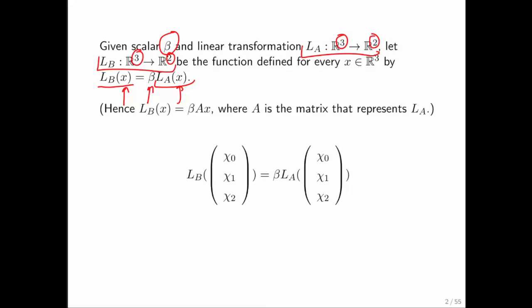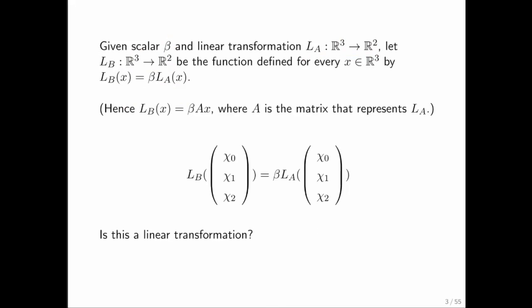Since L sub A is a linear transformation, we know there's a matrix A associated with it. Therefore, L sub B of x can be computed as matrix A times vector x, and then the result multiplied by beta. The question now becomes: is L sub B a linear transformation, and if it is, what matrix represents it?